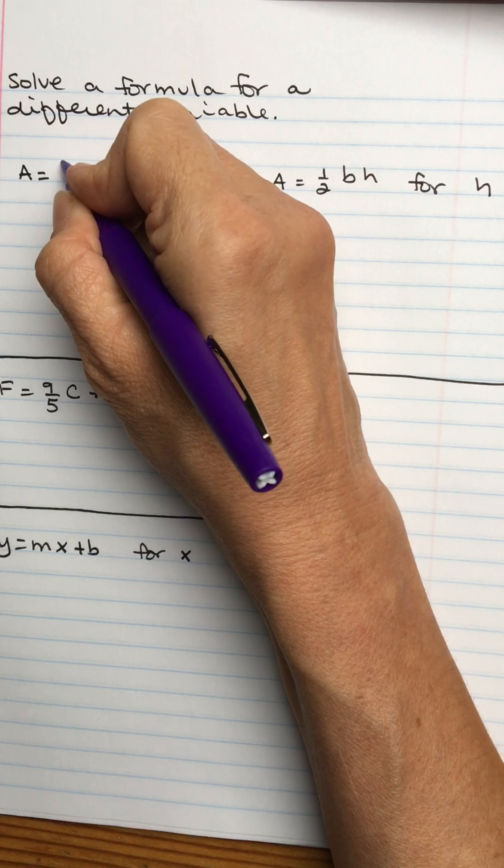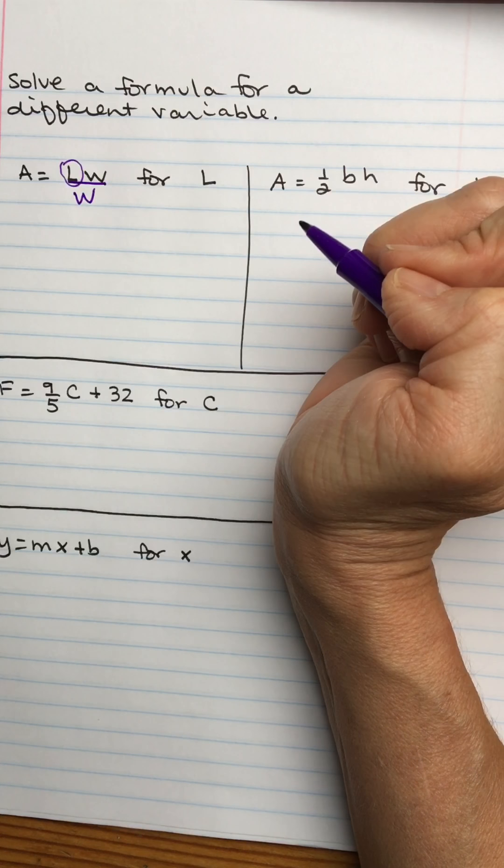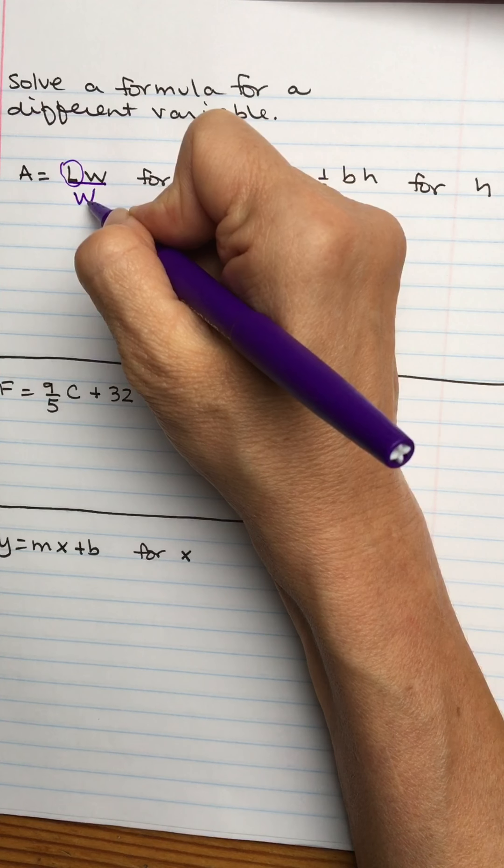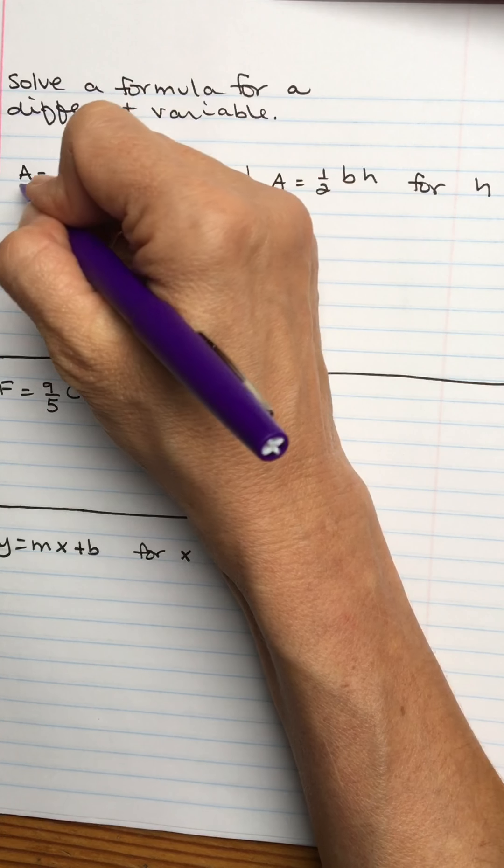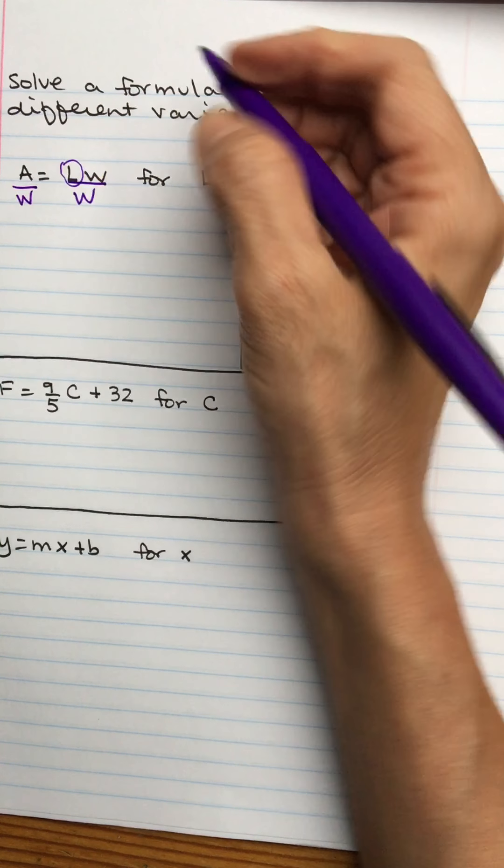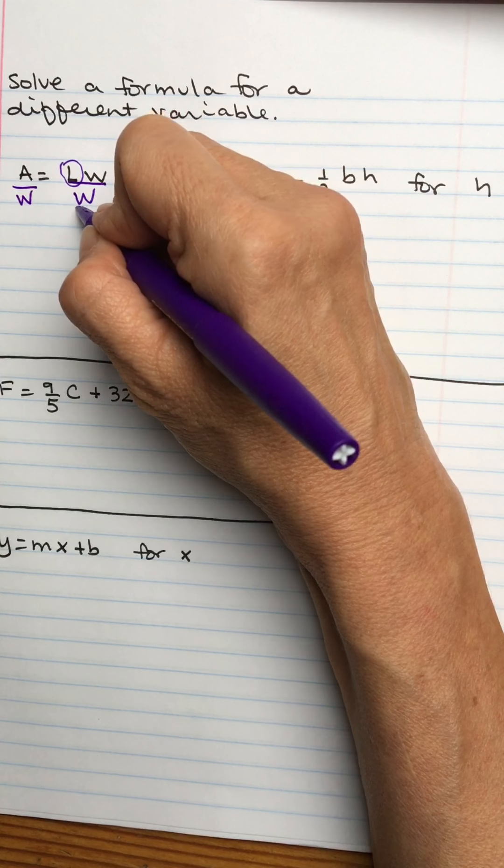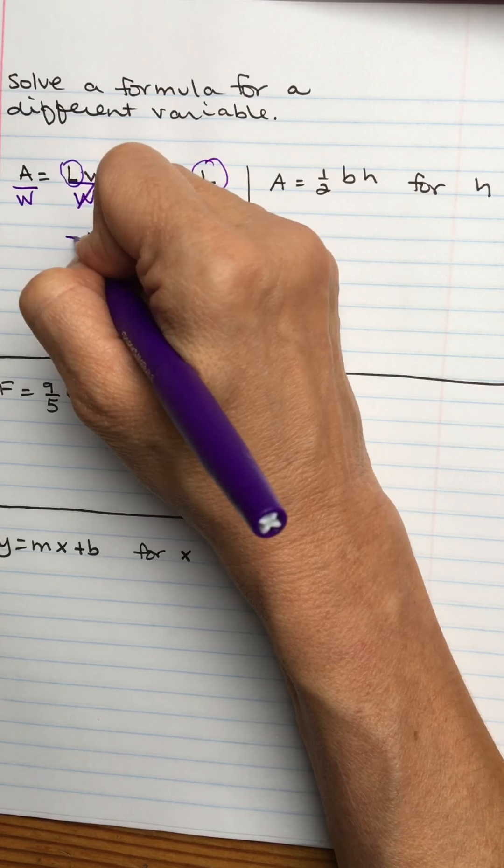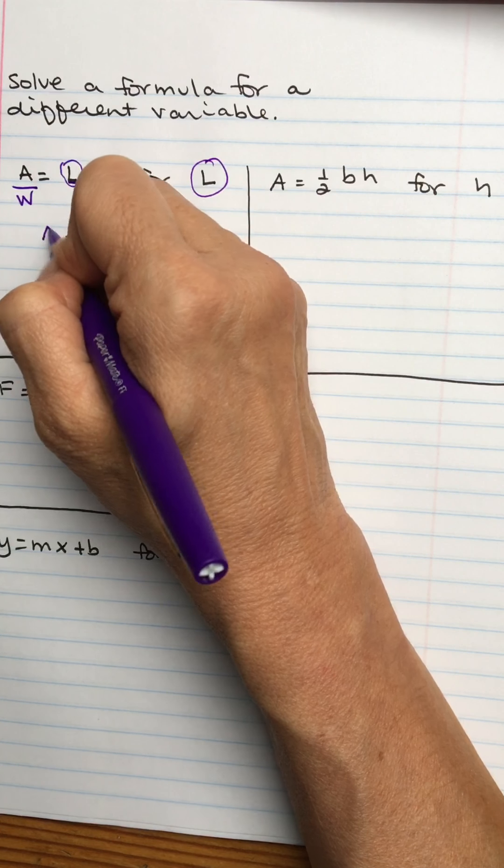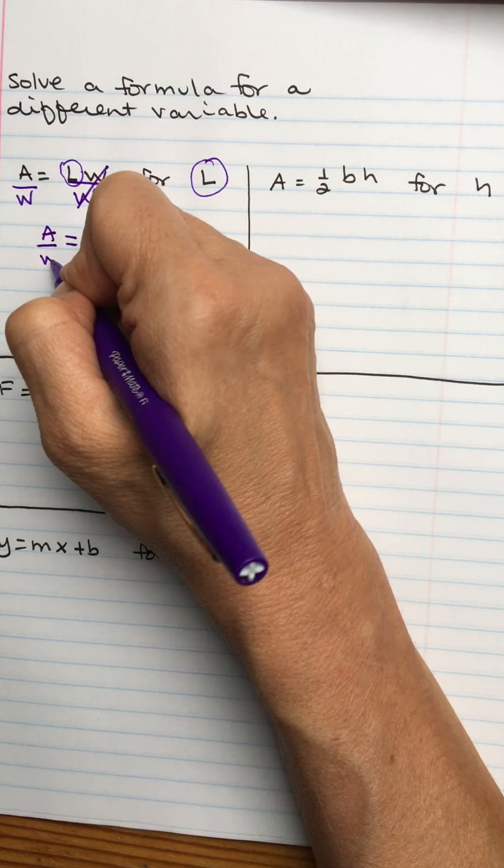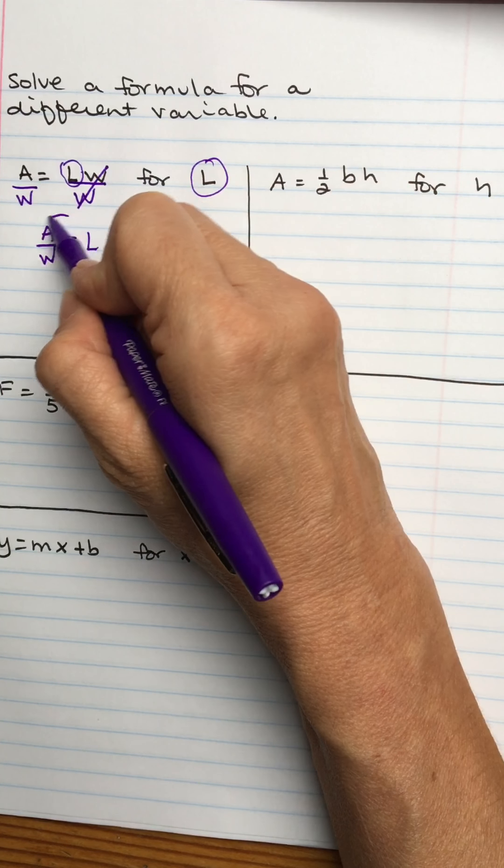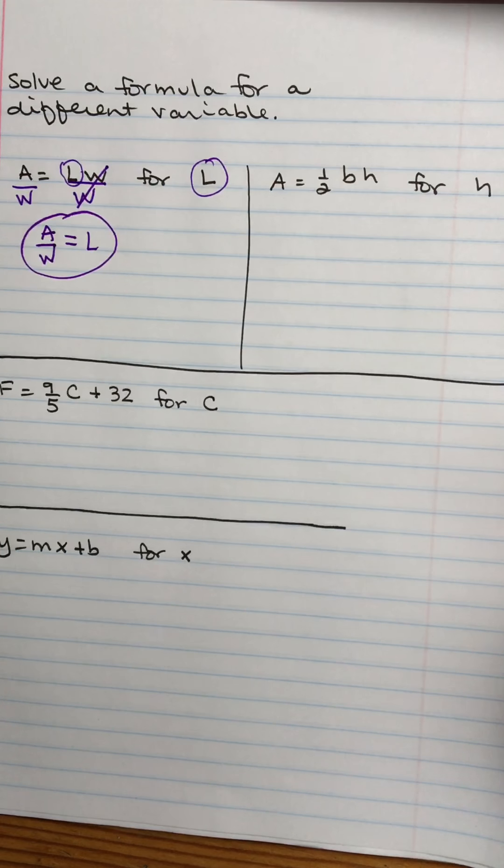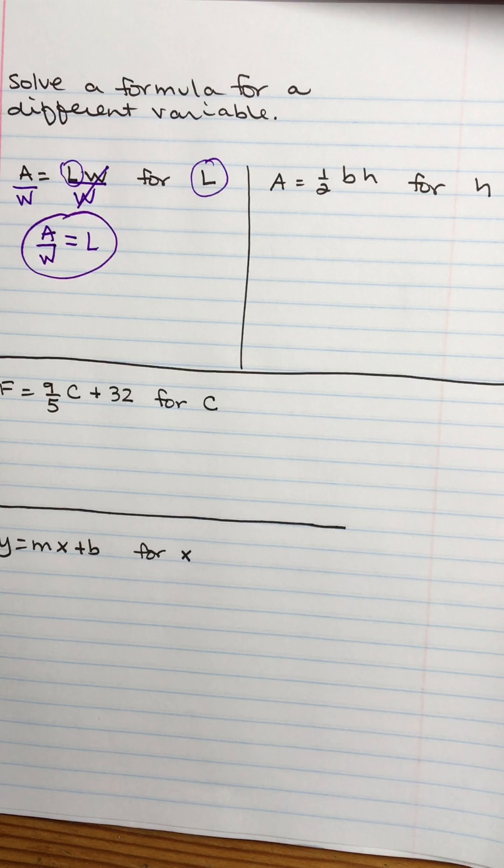I would want to divide the right side by W because the W over W would cancel. That would leave the L all by itself just like I want, but if I divide the right side by W, I have to divide the left side by W. Over here on the right, remember they cancel. L is by itself, just what I wanted. So L equals A over W.